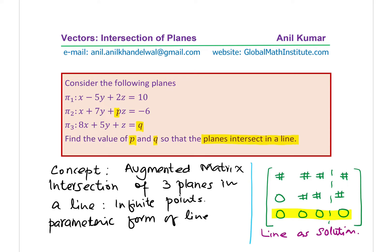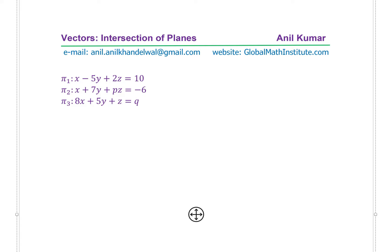Let's begin to solve this. You can also pause the video, answer this question, and then check with my solutions. Let's create our matrix now. Writing the coefficients, we have 1, -5, 2, 10. Then we have 1, 7, P (P is a coefficient), -6, 8, 5, 1, and Q. So that becomes the augmented matrix.